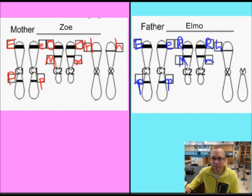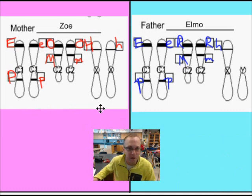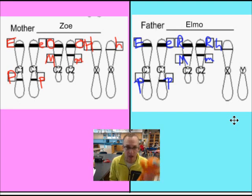Alright. Pause the video and do your information for your mom and your dad. Alright. Now that you have your mother information all filled in and your father information in, it's time to predict the results of what would happen if you crossed Zoe with Elmo. I know this is going to be so much fun. So, let's get started.